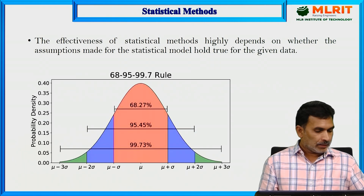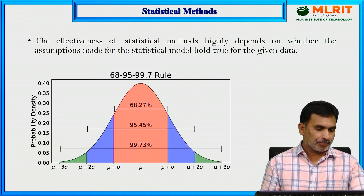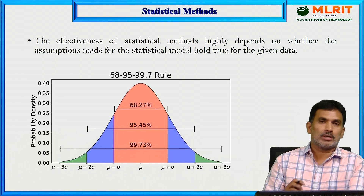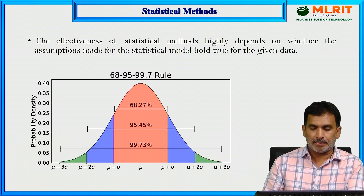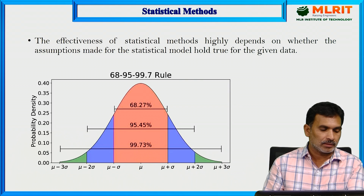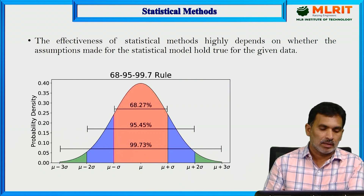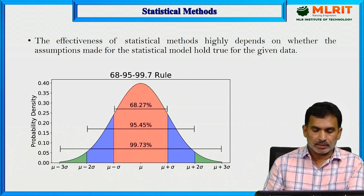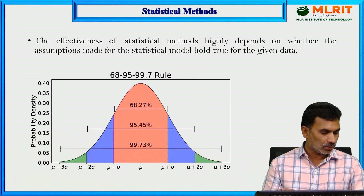The next category is statistical methods. The effectiveness of a statistical method highly depends on whether the assumptions made for the statistical model hold true for the given data or not.